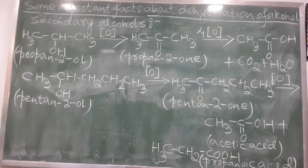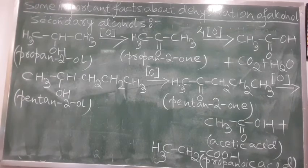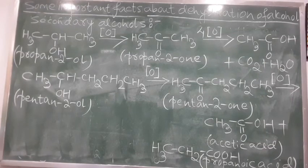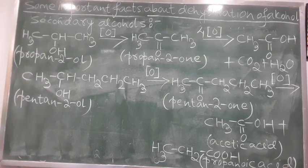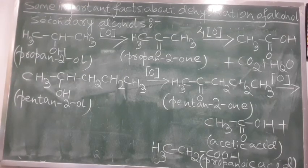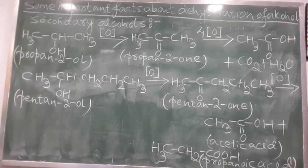When propan-2-ol is oxidized it forms propan-2-one. Always remember: a secondary alcohol when oxidized gives a ketone, which on further oxidation forms carboxylic acid — in this case, acetic acid. Next, pentan-2-ol when oxidized forms a ketone, pentan-2-one, and on further oxidation forms a mixture of acetic acid and propionic acid.